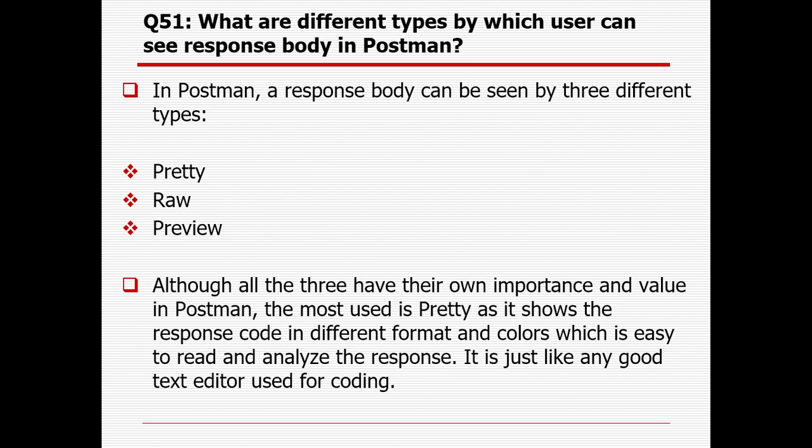What are the different types by which a user can see the response body in Postman? Whenever you are creating a collection, creating a folder, creating some request and clicking on the send button, you will be able to see the response. In Postman, a response body can be seen in three different types: the first one is Pretty, the second one is Raw, and the third one is Preview. The most used is Pretty, as it shows the response code in different formats and colors which is easy to read and analyze. It is just like any good text editor used for coding.